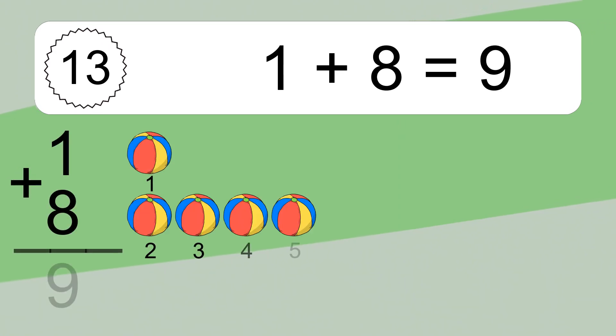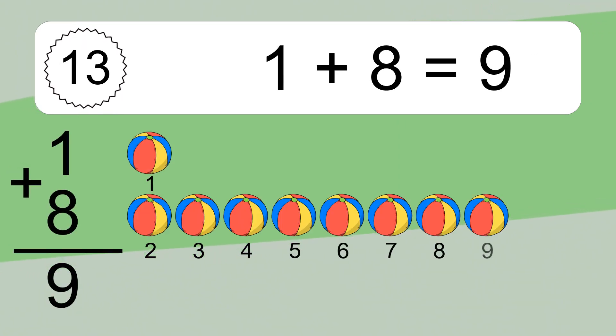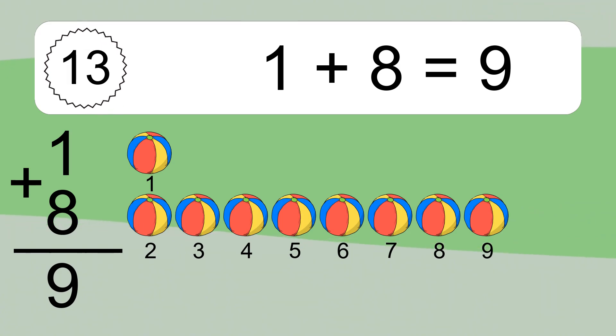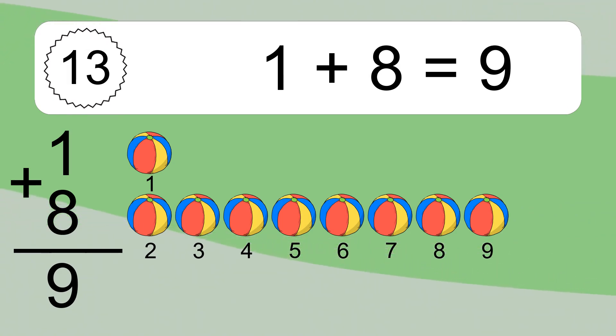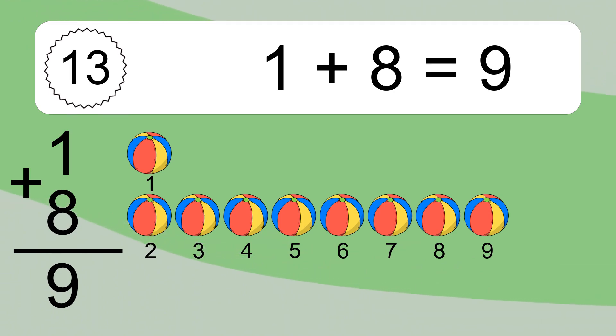1 plus 8 equals what? 1 plus 8 equals 9. Let's count it: 1, 2, 3, 4, 5, 6, 7, 8, 9.